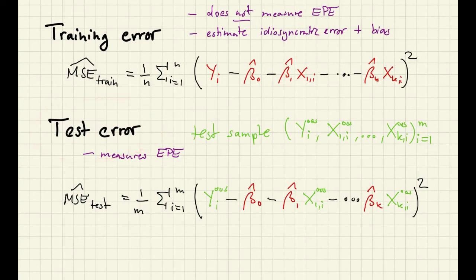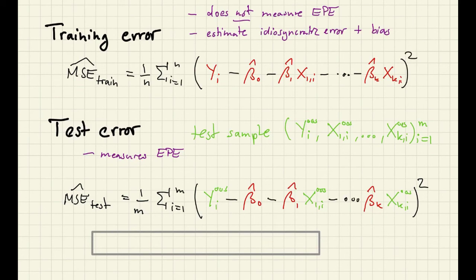So you might have been wondering where this test sample comes from, because in empirical practice often you just have one data sample and it's very difficult to add observations to it. So how do you get your hands on test data? And what people do in practice is that they take their original dataset, and I'll represent this here by a rectangle, and then they split this sample into two parts, and one part then they use as their training sample, and the other they use as their test sample.